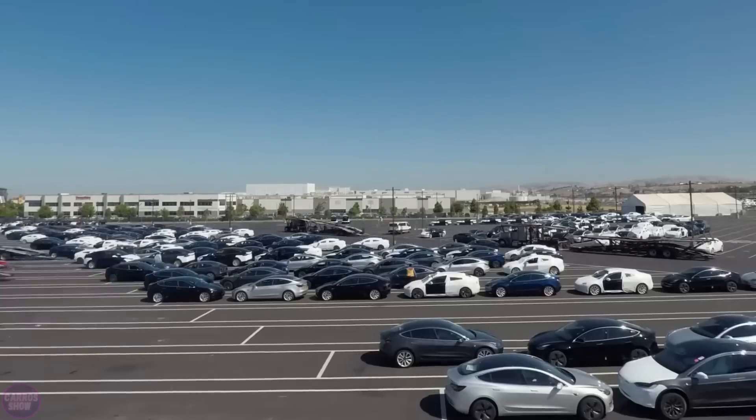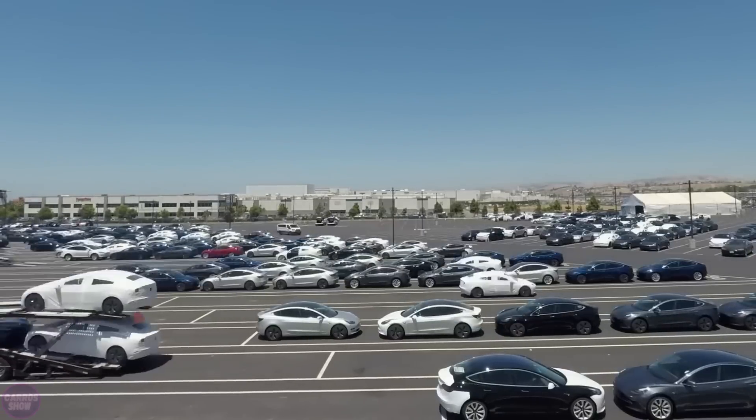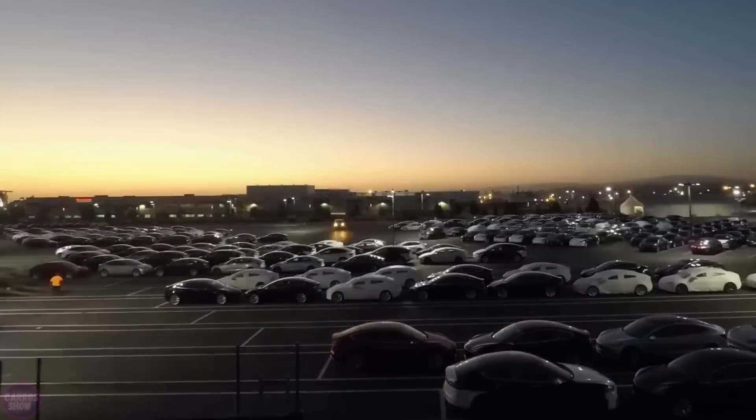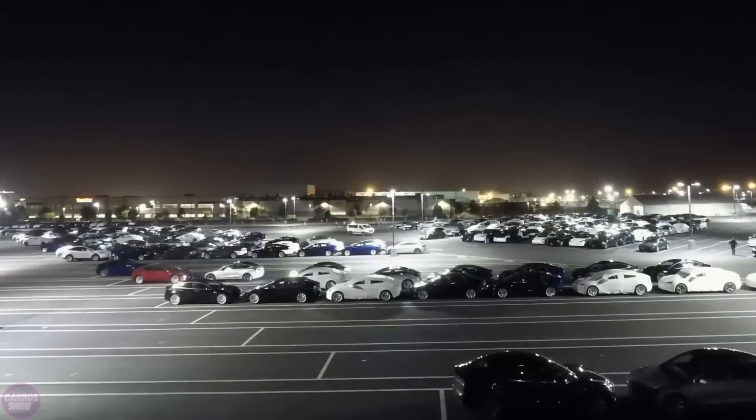Interestingly, if you look at the chronology, it took Tesla 12 years to produce the first million cars, 18 months for the second million, 11 months for the third million, and less than seven months for the fourth.